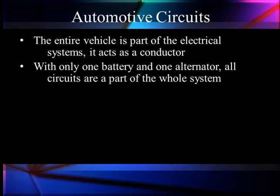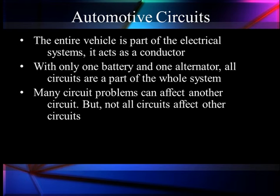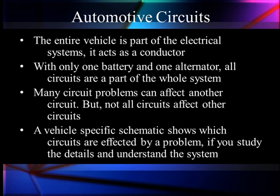With only one battery and one alternator in most cases, the whole vehicle becomes part of the overall system. And in many circuits, we can have problems where a problem in one circuit can affect another circuit. But this is not true of all circuits. We have to look at a vehicle-specific diagram that shows us which circuits are affected by a problem. If you study the details and understand the system operation, you can make a lot of determinations of where a possible problem is before you pick up a voltmeter. That's our objective here.